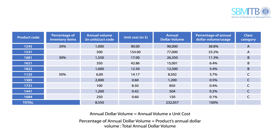Then, we sort the products based on their annual dollar volume from highest to lowest. Next, we define the percentage of inventory items: 20% for class A, 30% for class B, and 50% for class C.